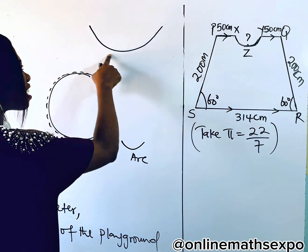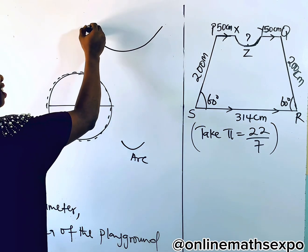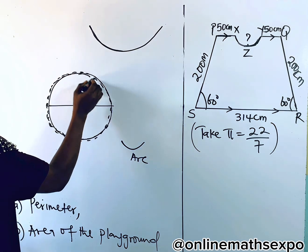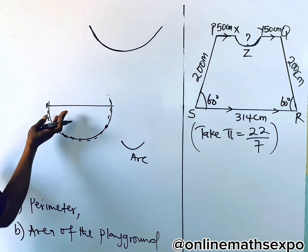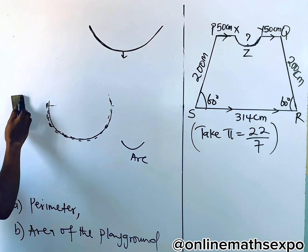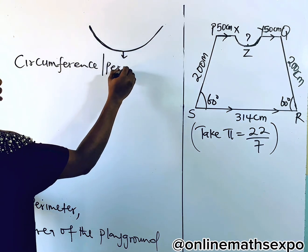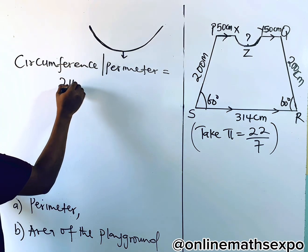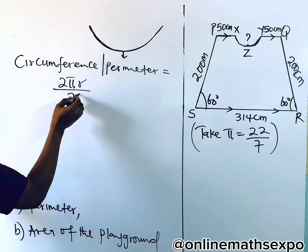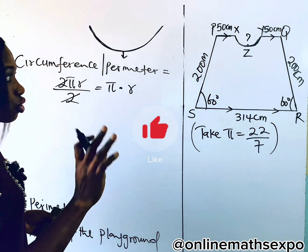The question says it is semicircular — that means it's half. To get this particular arc length, you get the total circumference of a circle and divide it by two. The circumference or perimeter of a circle is 2πr. Because it's a semicircle, you divide by two, and you are left with π multiplied by the radius. But the question is: how do we find the radius?